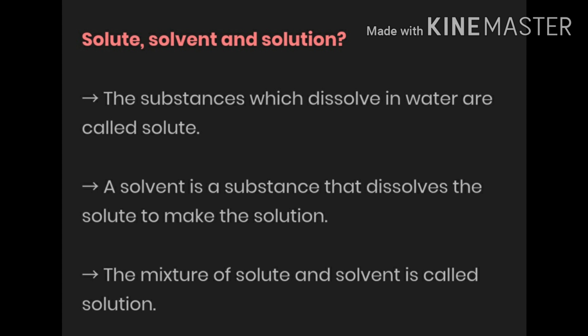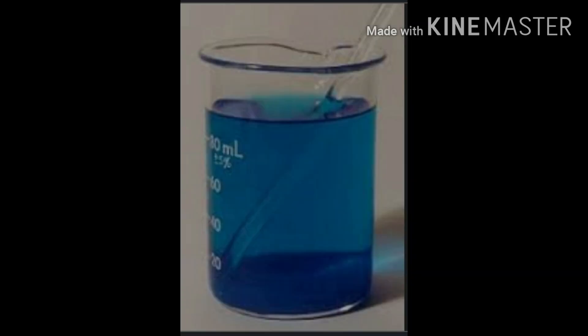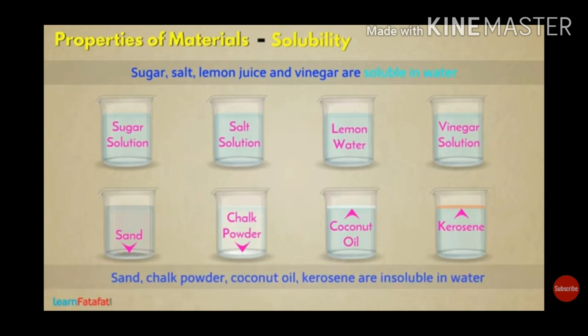Dissolved gases like carbon dioxide and oxygen help aquatic plants and animals to survive inside water. Copper sulfate solution is bluish in color — copper sulfate is also soluble in water. Sugar solution and salt solution are examples of soluble substances, while lemon juice and vinegar are miscible substances.